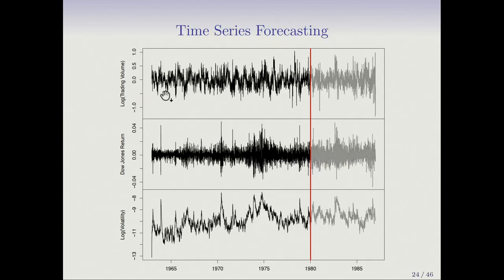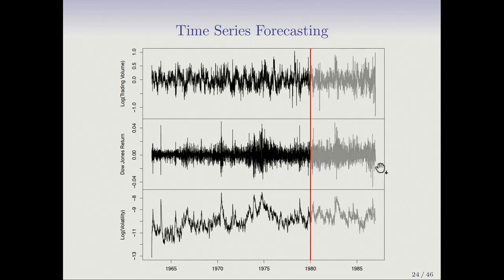In the top plot, you see the log of trading volume. In the middle plot, you see the Dow Jones return — it's an index. In the lower plot, you see a measure of volatility on that day. The red line indicates we're going to use the first part of the data for training a model and test it on the slightly grayed-out version of the data. So it's a training and test set.